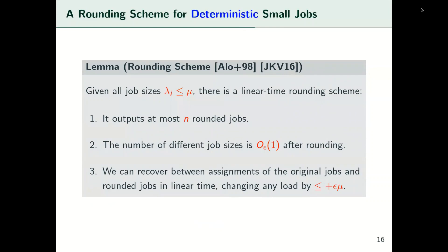Now we recap the rounding scheme for handling deterministic small jobs. Suppose all job sizes are less than the average load. There is a linear time rounding scheme such that: first, it outputs at most n rounded jobs, not increasing the total number; second, after rounding, the number of different job sizes is only a constant depending on the error epsilon; and finally, we can convert between assignments of the original and rounded jobs in linear time, while changing any machine's load by at most epsilon*mu additively.